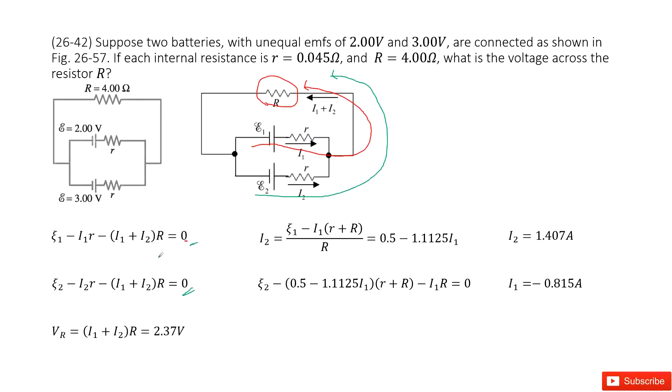Now you can see, from these two equations, we have two variables: I1 and I2. Of course, we can solve it to get I1 and I2.